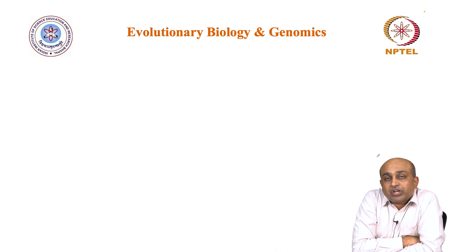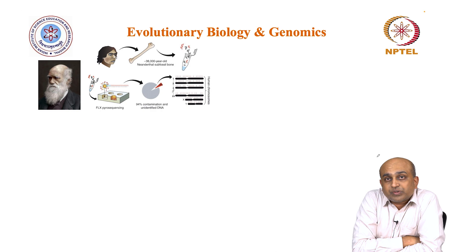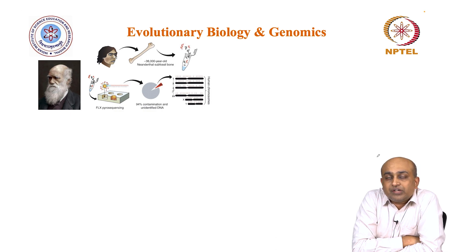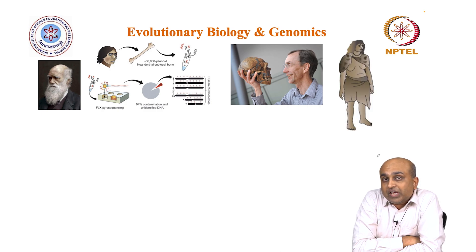Later, we will look at evolutionary biology and genomics — the relationship between these two fields and how they have enriched each other. We will start with Charles Darwin, how his theory of evolution came into being, and how this has changed with the advent of sequencing platforms. For example, we can now sequence ancient genomes of long-dead species and ancient humans. We will look at the work of Svante Pääbo, the recent Nobel laureate who sequenced the Neanderthal and Denisovan genomes and reconstructed how these contribute to what makes us human today.